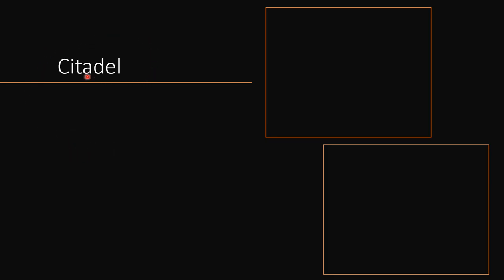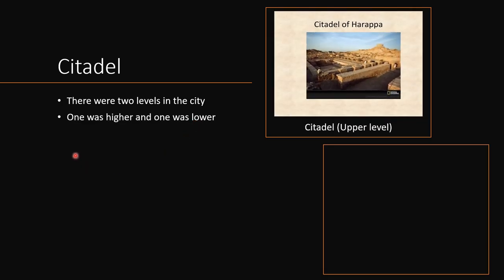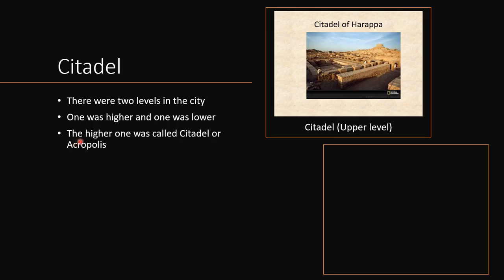The first important feature is the citadel. There were two levels in the city — one was the higher level and one was the lower level. The citadel was on the upper level, as shown in this picture. It was also known as the Acropolis, and the lower level of the city was used as the residential area for common people.